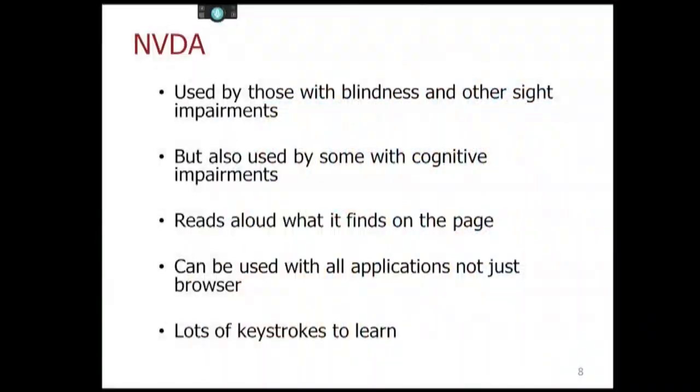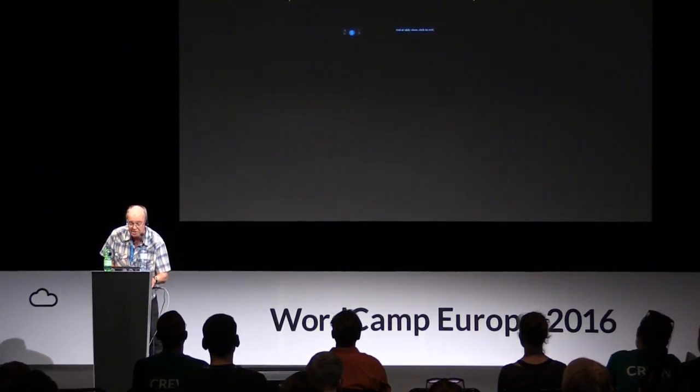NVDA is an open-source screen reader. It's free to download, and it's used primarily by those with blindness and other sight issues, but also sometimes by people with cognitive impairments and people with dyslexia as well. It reads out what it finds on the page — it's basically working off whatever is in the DOM when your website arrives in or has been manipulated in a browser. It's very keystroke-based software with lots and lots of keystrokes to learn.